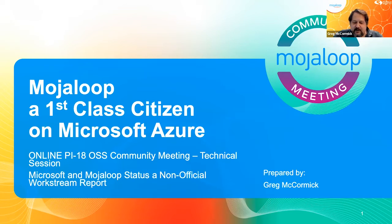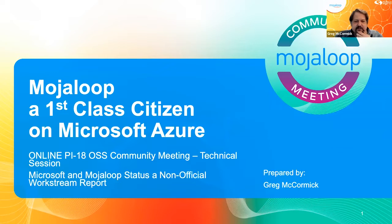I have a horrible cold, and hopefully I'll make it through without coughing on you. I've got a lot of over-the-counter drugs in me. This session is about making Moja Loop a first-class citizen on Microsoft Azure. We've talked about this in the past, so part of this is a recap for people who don't know what's going on.